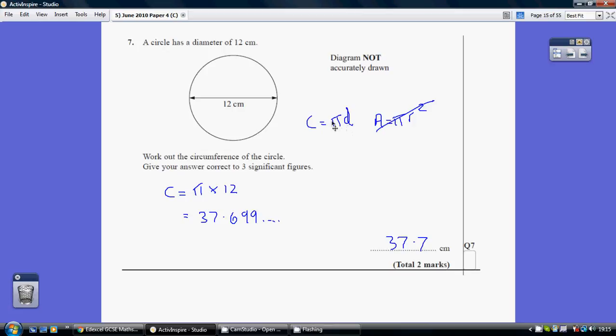On this occasion, the diameter, remember the diameter is the length all the way across, so it's just pi times 12. Use the pi button on your calculator, multiply it by 12, and you get this.